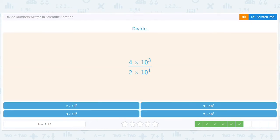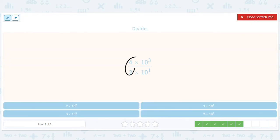Okay, how about this? Well, 4 divided by 2 is 2. 10 to the third divided by 10 to the first is 3 minus 2. I'm sorry, 3 minus 1 is 2. So 10 squared. So we should get 2 times 10 squared.